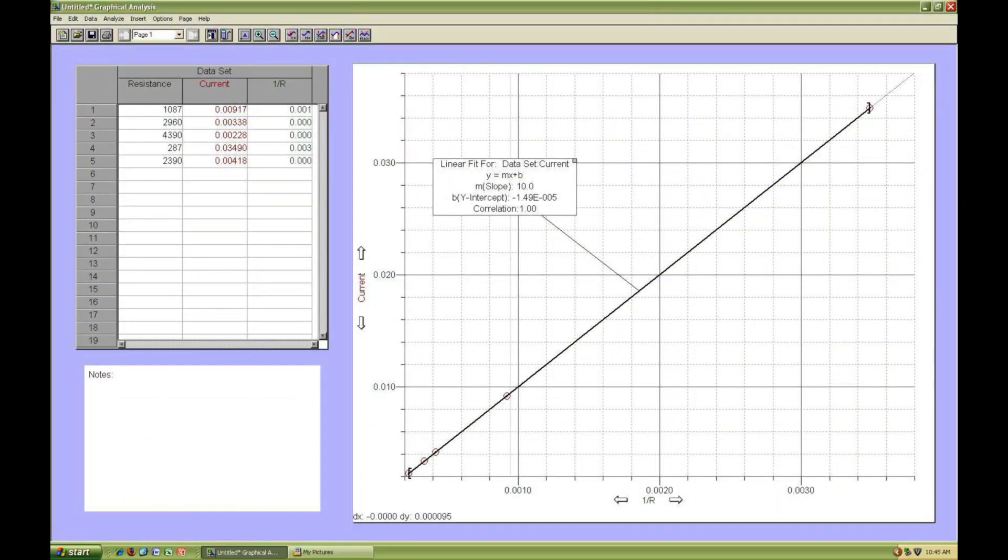Make a plot of I versus the inverse of R. Make certain that you use the measured values of resistance, not the color band value, which could be very inaccurate. Here the slope is found to be 10, and the correlation coefficient is very close to 1.0.